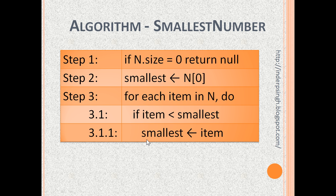This means that if the algorithm comes across an item smaller than the value in the smallest variable, it updates the smallest variable to that item. In other words, this algorithm remembers the smallest item it has seen in the list so far.